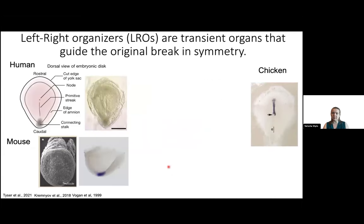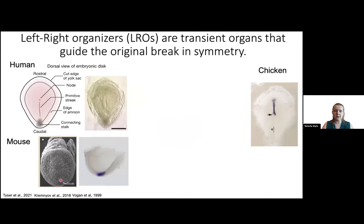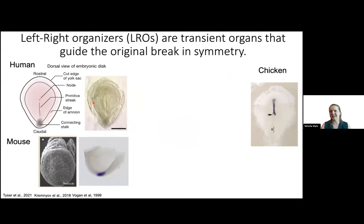What I'm really interested in is understanding how we establish this left-right asymmetry. The organ responsible is known as the left-right organizer, oftentimes also referred to as the node — I'll use the terms interchangeably. In the human, the node is this dot in the posterior end of the embryo, just anterior to the primitive streak. In the mouse, the node has a teardrop shape. Here's Hansen's node in the chicken. Embryos in this talk will be shown from the ventral view, so the embryo's left will be on your right and vice versa.